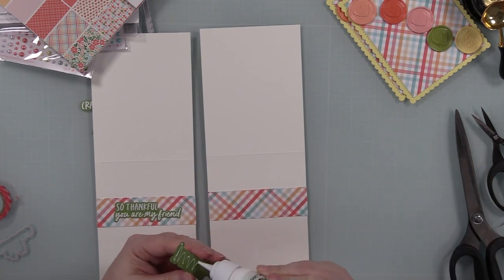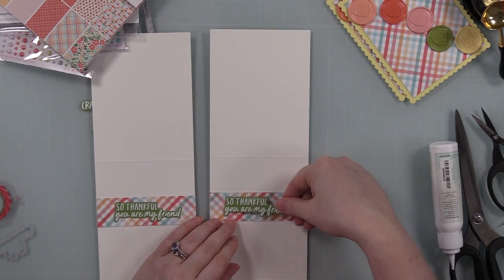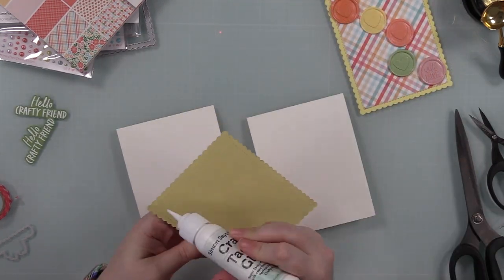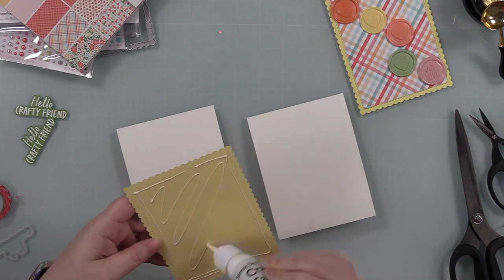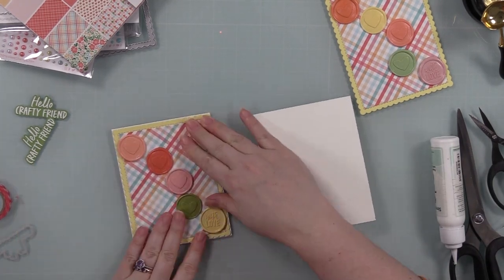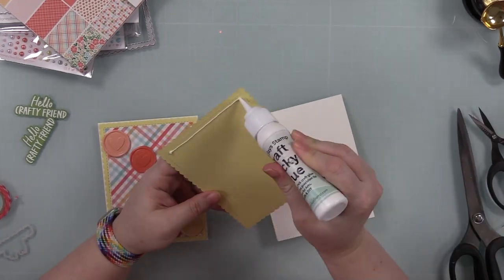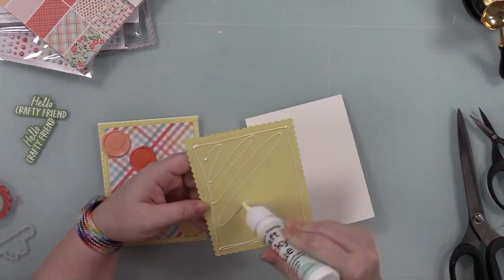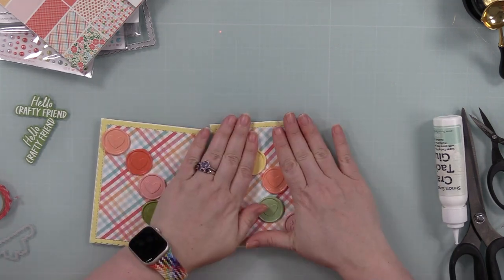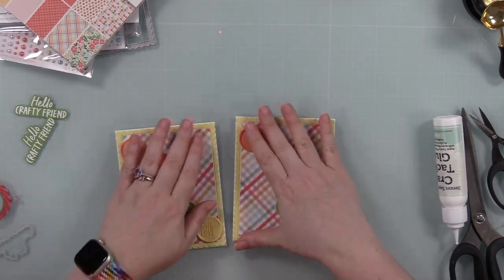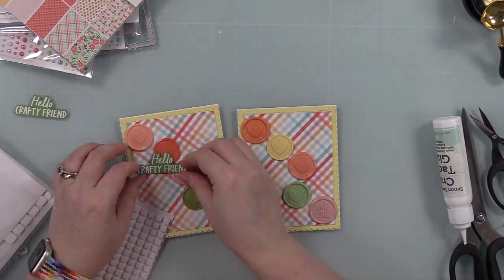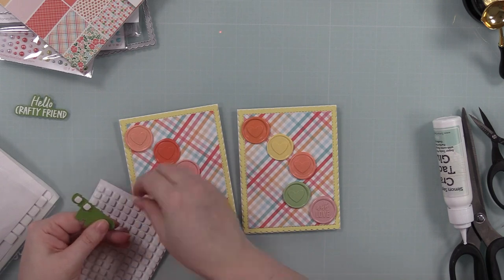So I did that with both of the insides of the cards. Once those are adhered into place, then I'm going to adhere those scalloped card fronts to the card bases. Same thing, just use craft tacky glue for that. And then the Hello Crafty Friend die cut sentiment, I'm going to pop up with some foam squares because they're going to slightly overlap the little wax seals. So got everything into place, putting foam squares on the back of my little sentiments, and then get those adhered into place.